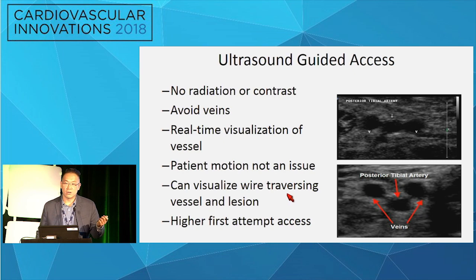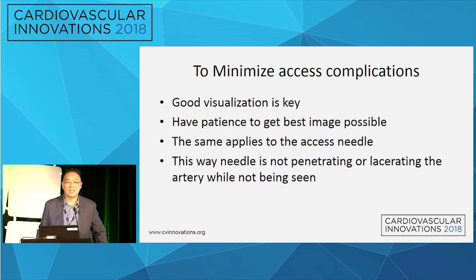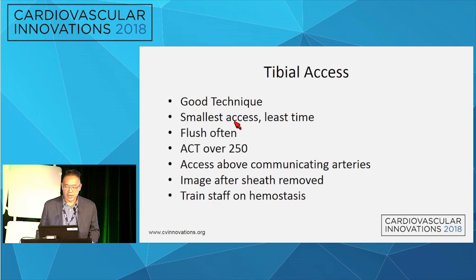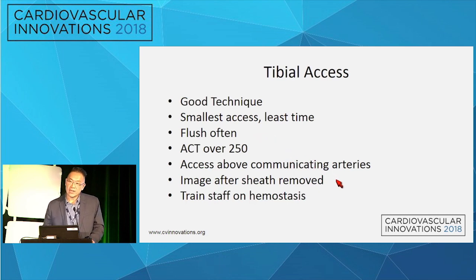Real-time visualization means it doesn't matter if the patient moves when you stick them — unlike a fluoroscopic roadmap. You can also watch the wire traverse the vessel and lesion. Higher first-attempt access rates as well. In the old days with fluoroscopic guidance exclusively, you'd be radiating yourself, get blood, put the wire in, and end up in the vein. To minimize complications, good visualization is key. Have patience when you start — take time to get the best image. If you're using a tech, I recommend using one in the beginning. Let them get the image, then follow the tip down to the artery. Use the smallest access, keep it in for the least amount of time. Make sure you cross the lesion, deliver therapy, balloon, and then remove the sheath. Flush often, and I typically run my ACT over 250.